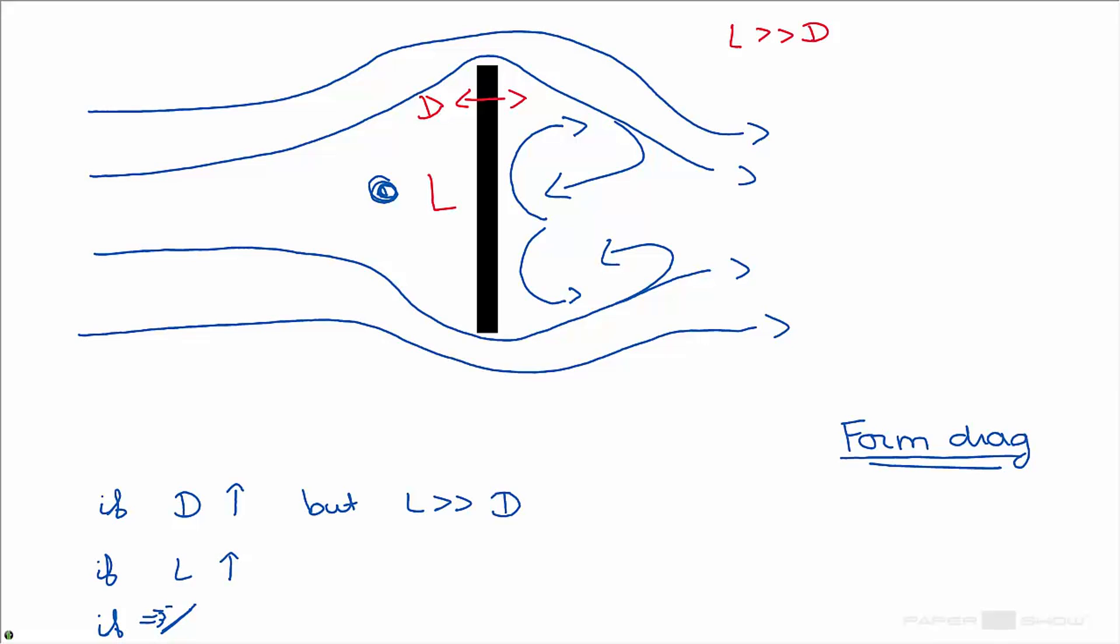First let me start with the first one. If d would be bigger, this section here would be bigger and therefore there would be much more contact between the fluid and the object. But this would increase the friction drag since friction drag is created between the skin of the object and the fluid.